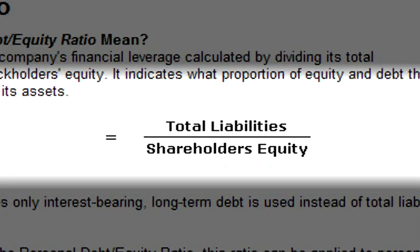The second ratio is the debt-to-equity ratio, which is simply taking the total debt and dividing it by the total owner's equity. This ratio helps an analyst understand if the company has too much debt such that it's not able to pay off its owners, or vice versa, if it has little debt, it'll be able to pay off its owners very well.